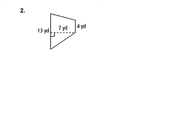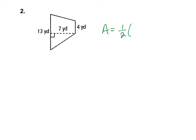For this next case, I want to find the area. My bases are 13 and 4, and this is the height — the segment that is perpendicular to both bases. So the area equals one-half of (13 plus 4) times 7, which is one-half of 17 times 7, giving an area of 59.5 square yards.